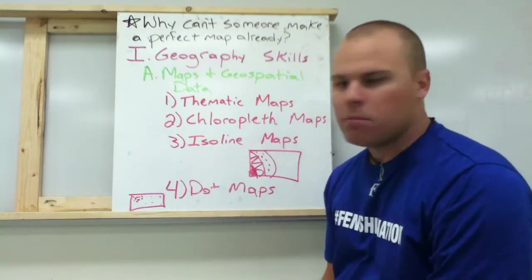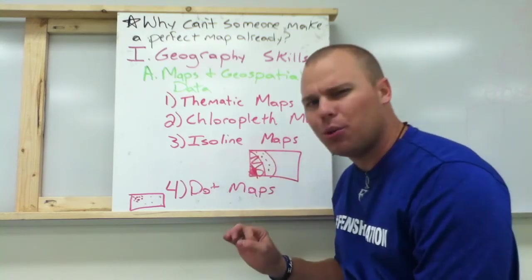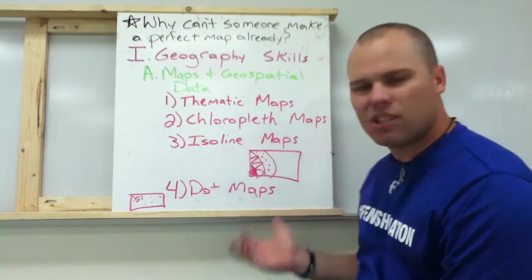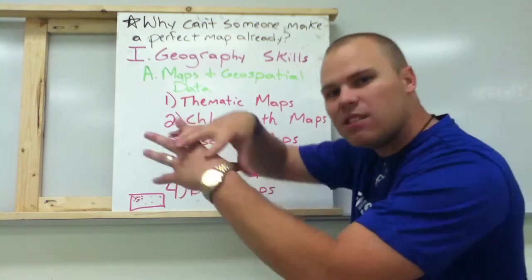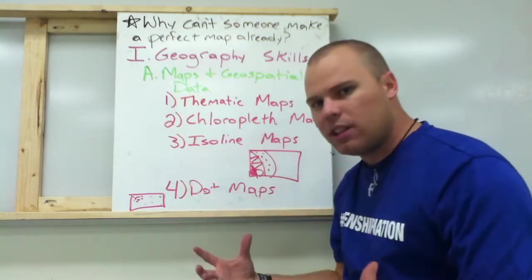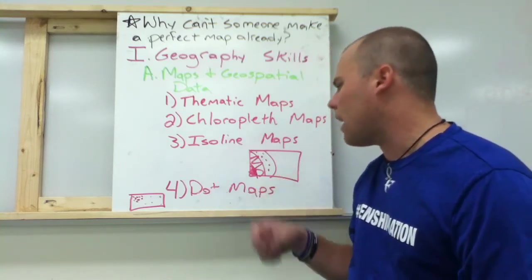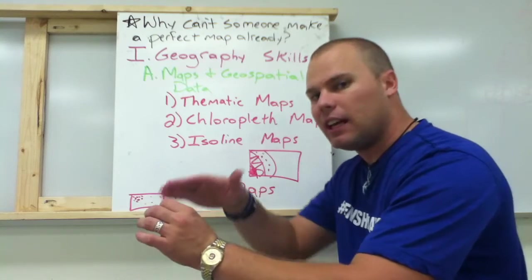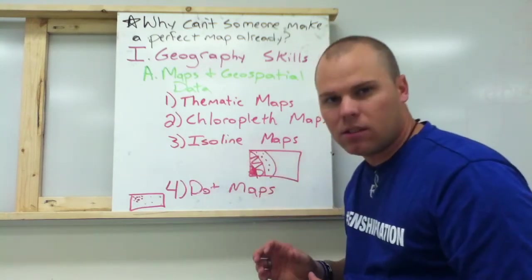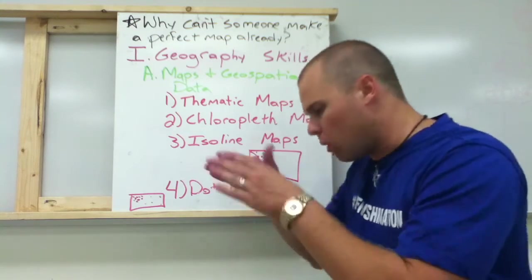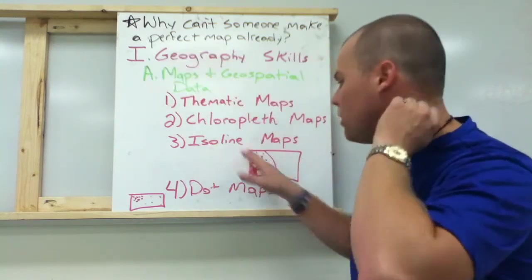Then we've got isoline maps. A population density map is a good example because it's a map that shows different shadings and uses different lines to display data. It uses different shading and different lines that correspond to show you different things — sort of like a topographical map as well that shows elevations through different lines.